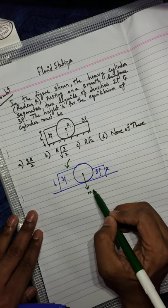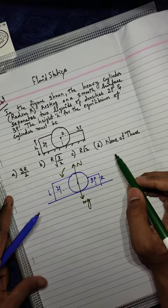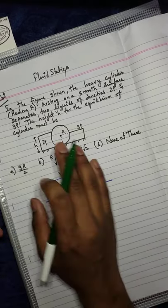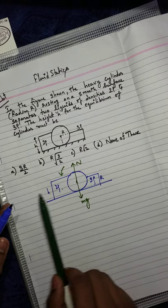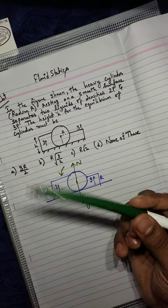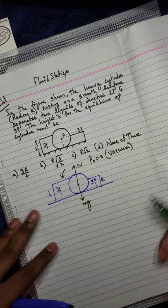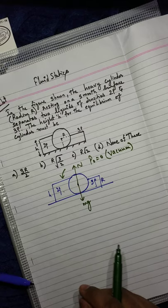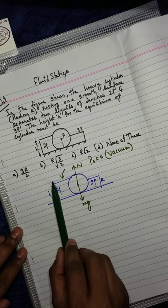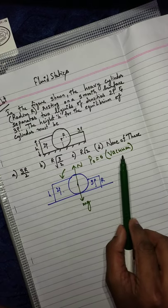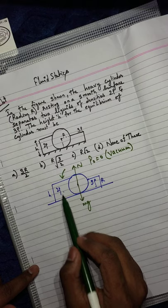One is the mass of the cylinder mg, and another is the normal reaction from the surface. For simplicity, let us assume that atmospheric pressure is not there, or assume that this setup is in vacuum. Even if there is atmospheric pressure, the net effect would be cancelled — especially in the horizontal forces, the net effect of atmospheric pressure would cancel. So, what are the different forces acting? Now let us go to the horizontal forces. This liquid will exert some force towards the right and this liquid will exert some force towards the left. This force is because of the pressure exerted by the liquid.